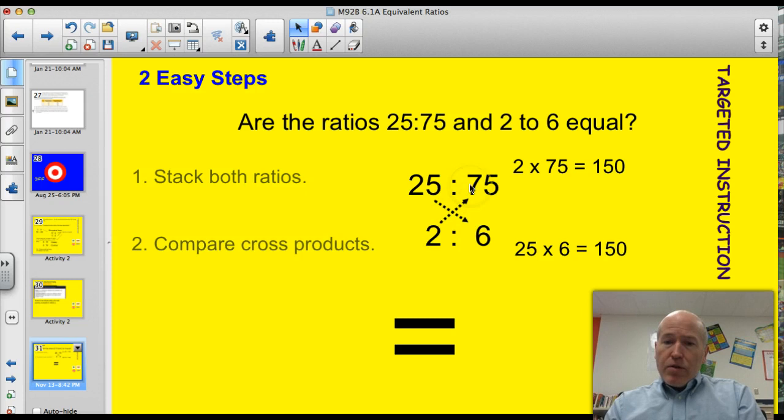2 times 75 up here is 150, and 25 times 6, that's 150. If these two products are equal, the ratios are equal. So these two ratios are equal.